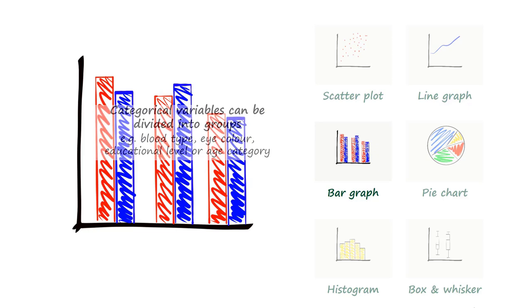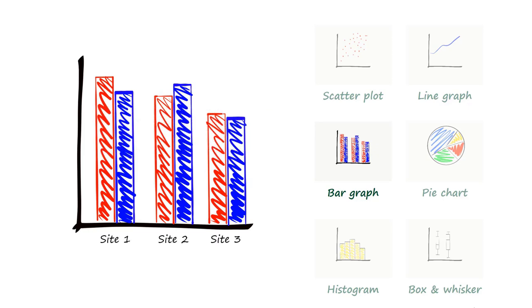On a bar graph, the categories are shown along the x axis. For example, the different sites where data was collected. The y axis is usually a count. In this example, it would be the number of seeds collected. The red and blue bars are explained in the legend, as there are two different plants at each site.